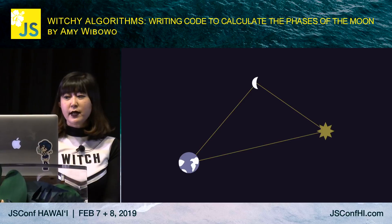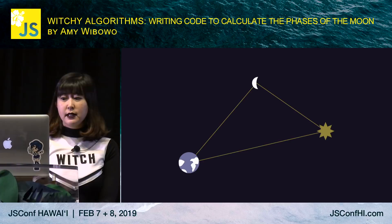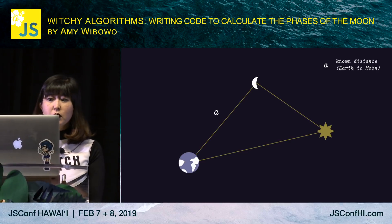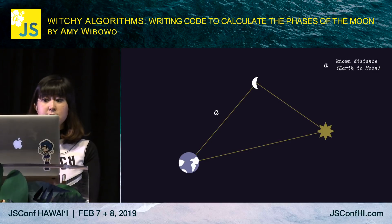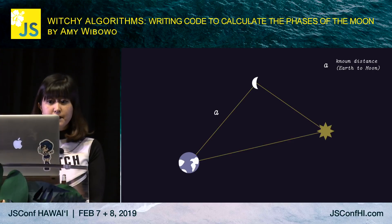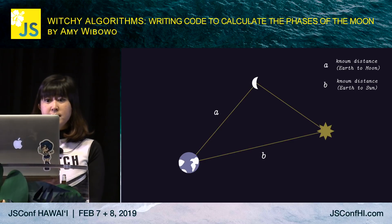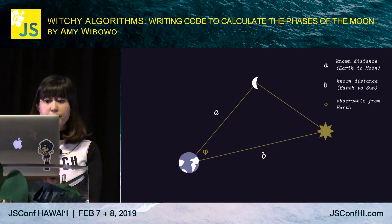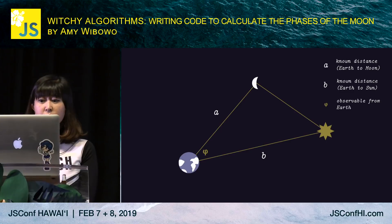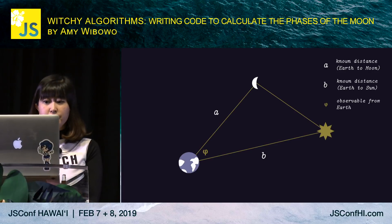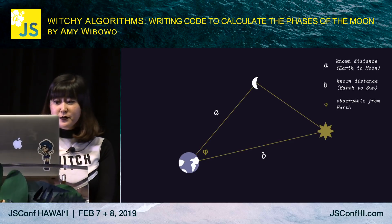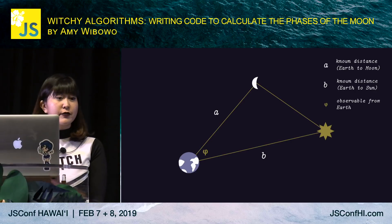At this point, it's worth remembering that the earth, moon, and sun are three points in space, so they form a triangle. What information in this triangle do we know? One side has length equal to the distance between the moon and the earth — a known distance that doesn't change as the moon revolves around the earth or as the earth revolves around the sun. The distance between the earth and the sun is also a known distance. And phi, the geocentric elongation — the angle the moon and sun form from the point of view of the earth — is something we can observe and measure from earth, so let's count it as known.